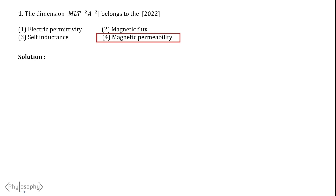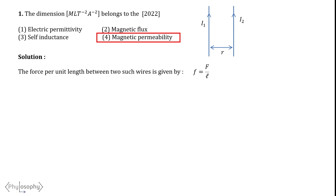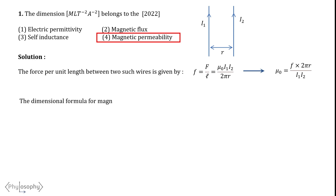To derive the dimensional formula for magnetic permeability, we can use the expression for the force between two parallel current-carrying wires. The force per unit length between two such wires is given by F equals mu naught I1 times I2 by 2 pi R. Here, F is the force per unit length, mu naught is the magnetic permeability in free space, I1 and I2 are the currents, and R is the separation between the wires. This expression can be rearranged as mu naught equals F times 2 pi R by I1 times I2.